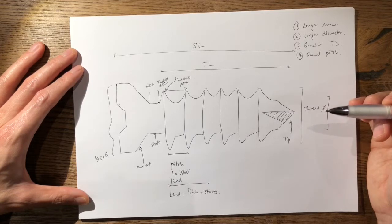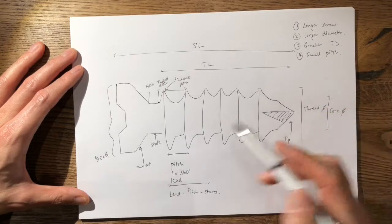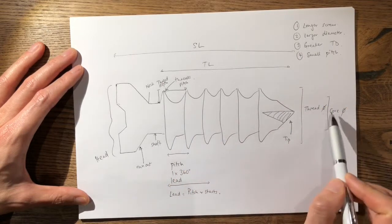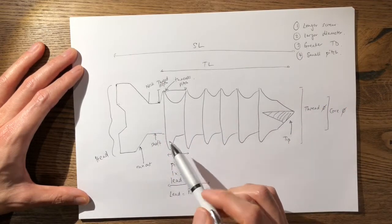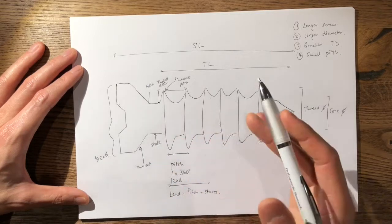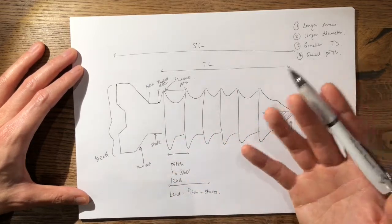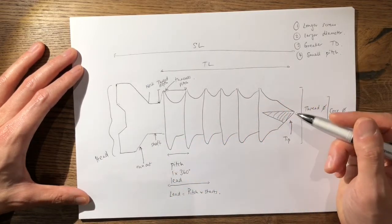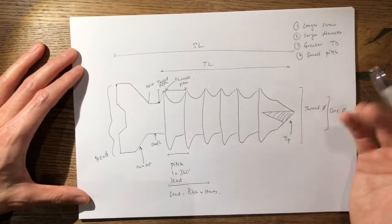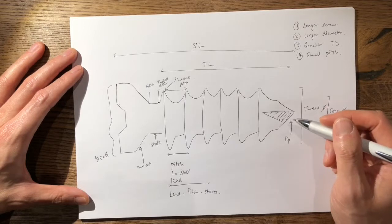Typically the strength of the screw is lower as a result of a lower core diameter, but in cancellous screws it is much more important to have a higher pullout strength. Whereas in cortical screws it is much more important to have a higher bending stiffness.